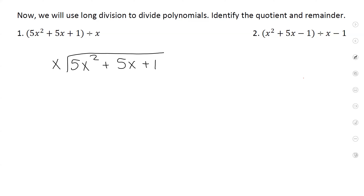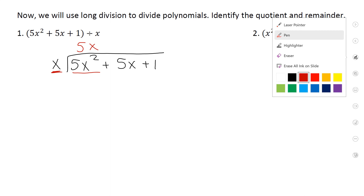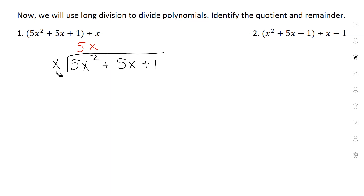x times what will give you 5x squared? 5x. Everyone write 5x on the top. So if you remember, we're supposed to multiply these two. x times 5x is 5x squared. Then we change the sign. What's 5 minus 5? 0. So those cancel out.